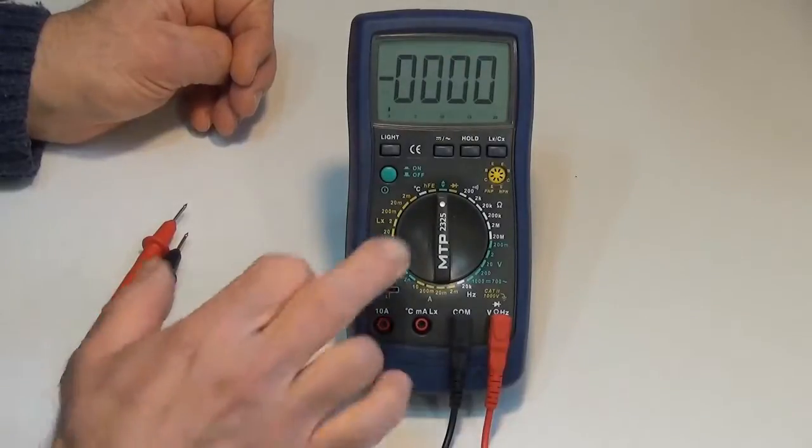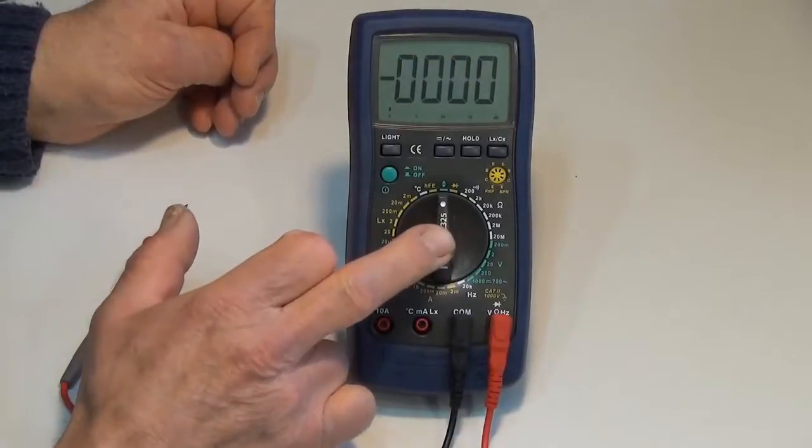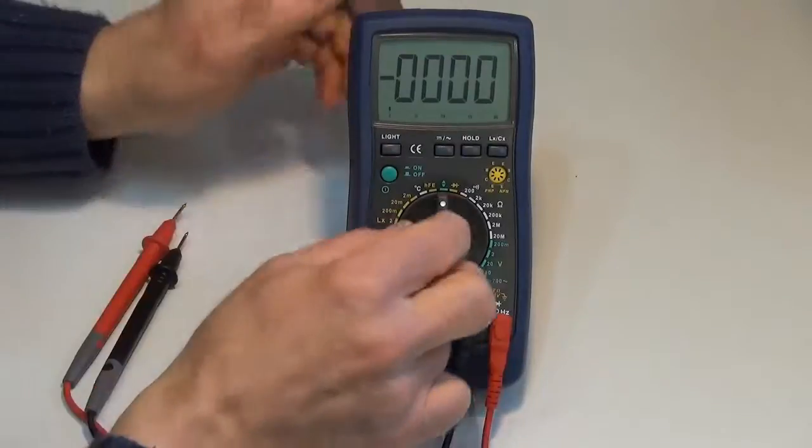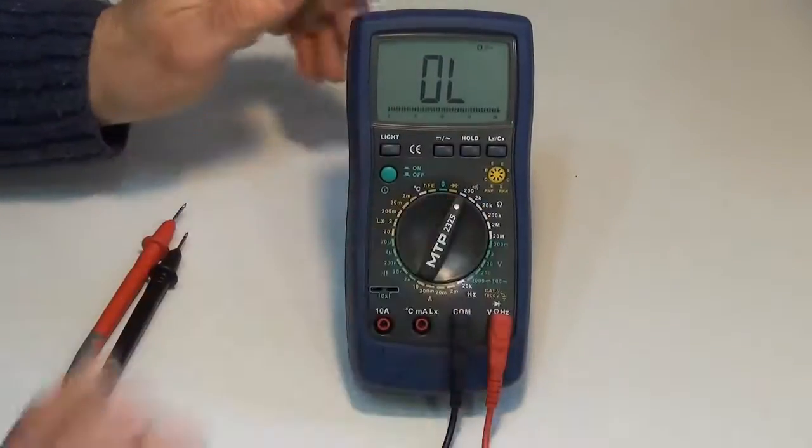Now I want to set my function switch, that's this switch here, to a resistance function. And I'm going to choose the lowest resistance range.